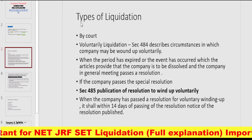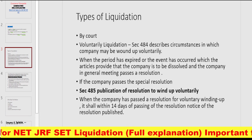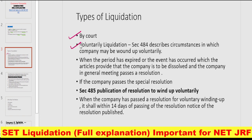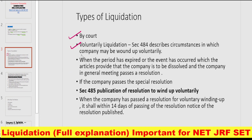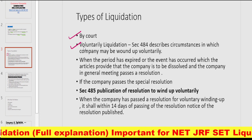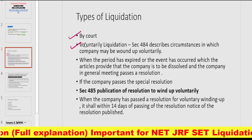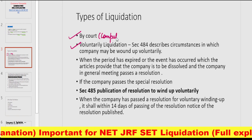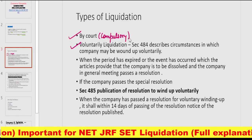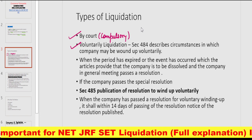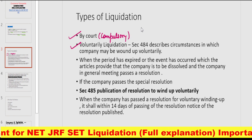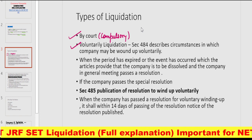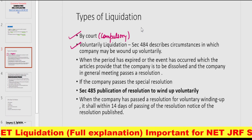Ab aate hain iske types ke upar. Types of liquidation mein pehla hota hai winding up by court, aur doosra hota hai voluntary liquidation. Winding up by court ko compulsory winding up bhi bolte hain. Yeh initiated hota hai by an application by way of petition — pehle ek petition honi chahiye court ke andar, uske baad hi yeh shuru hoti hai.